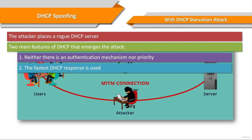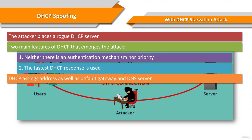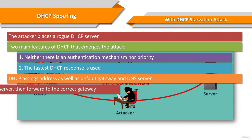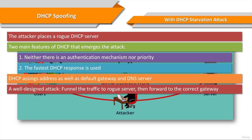Second, as clients are turned on and request an address, the server with the fastest response is used. So if the device receives a response from the rogue server first, the rogue server can assign any address as well as control which device it uses as a gateway. A well-designed attack can funnel traffic from local hosts to a rogue server that logs all the traffic and then forwards that traffic out to the correct gateway.